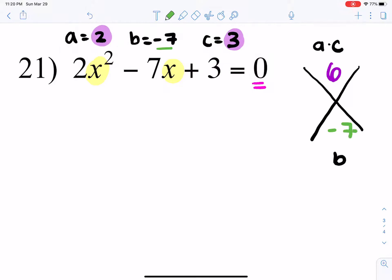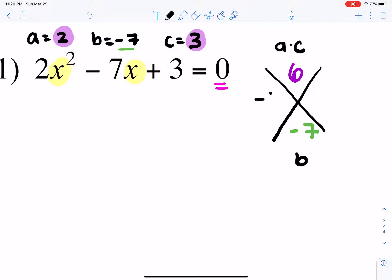So what you want to find is what times what is 6, but if you add it, it's negative 7. So, the numbers are negative 6 and negative 1.